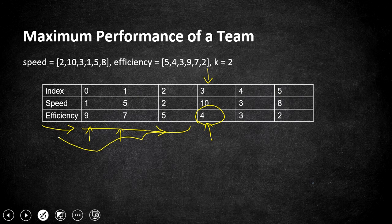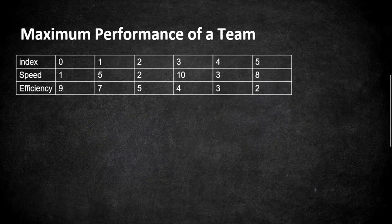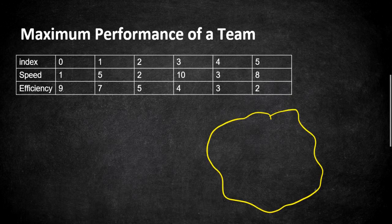Once we have sorted by efficiencies, we maintain a min-heap which holds the top k employees with the highest speeds. We maintain this heap of size k, pushing all possible speeds into it, which keeps the maximum speeds of employees. Since efficiencies are already sorted they are already maximum. We use the heap to maintain the top k speeds.